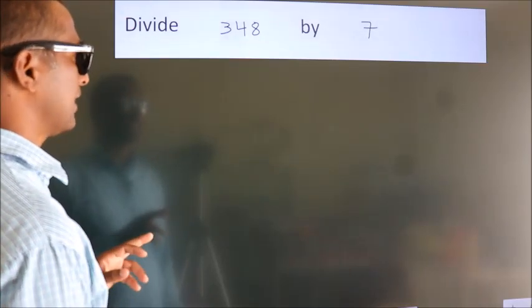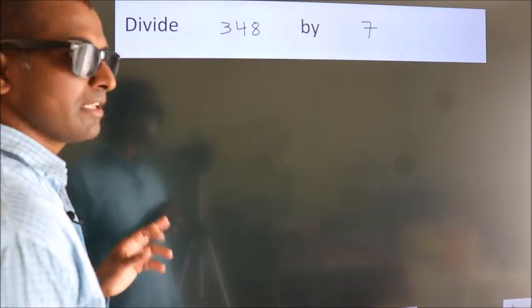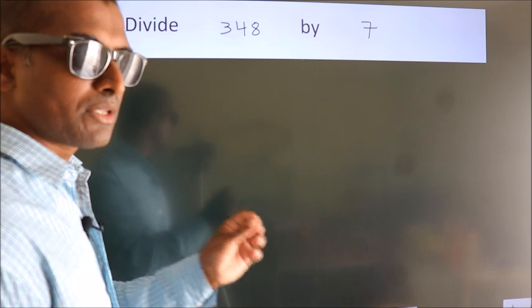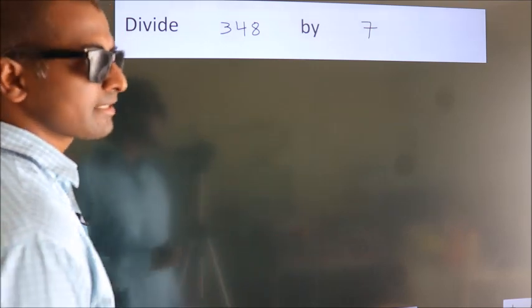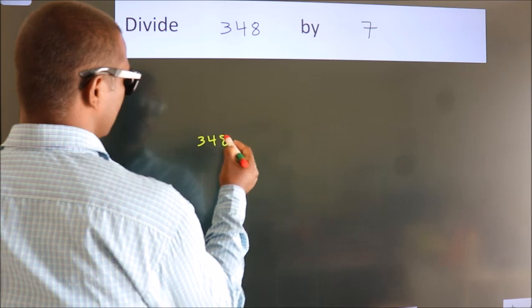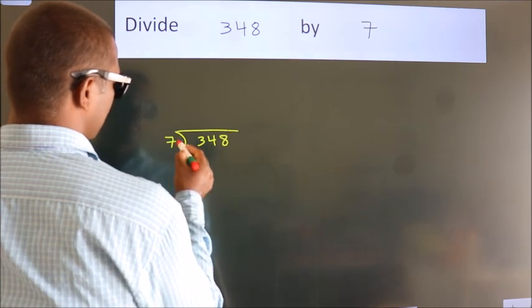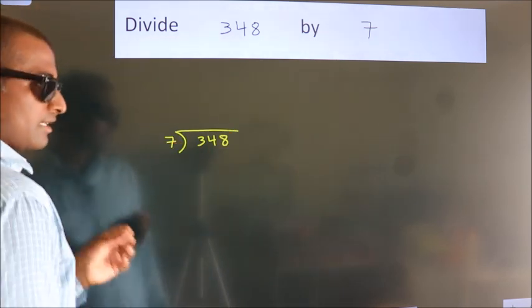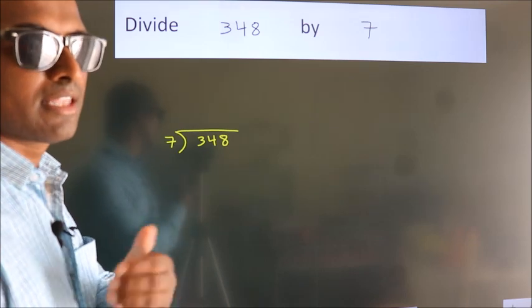Divide 348 by 7. To do this division, we should frame it in this way. 348 here, 7 here. This is your step 1. Next.